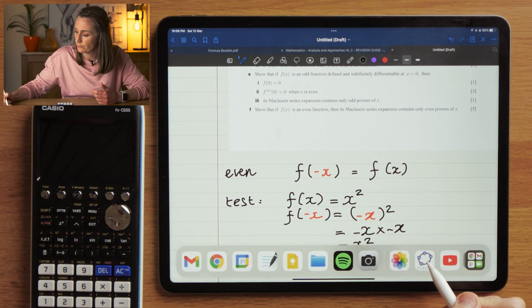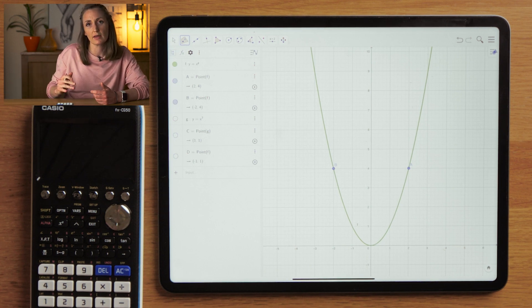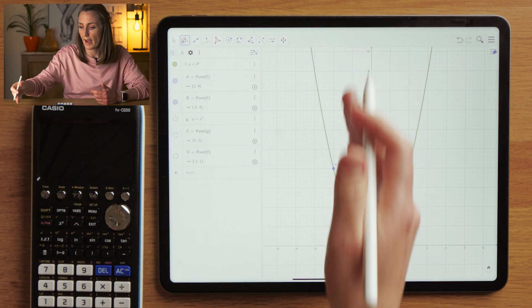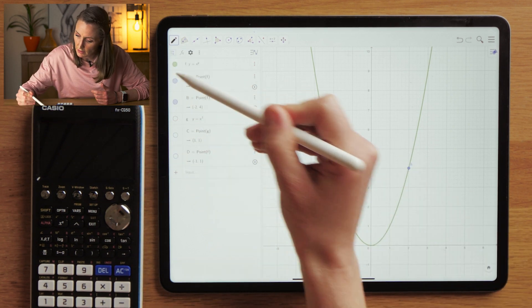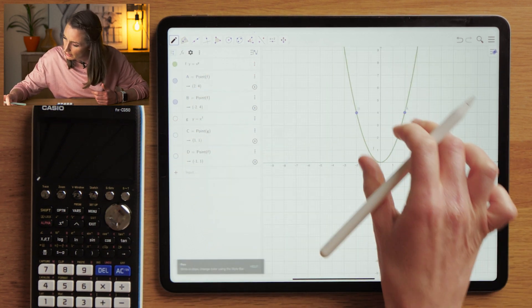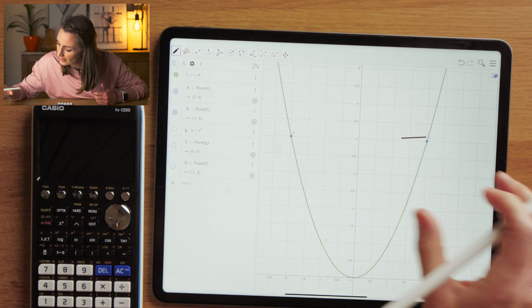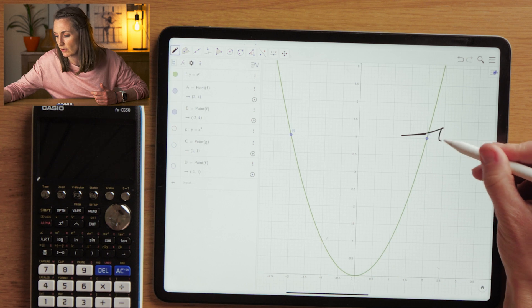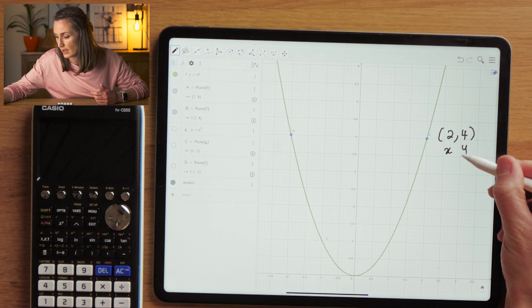So let's consider graphically what an even function looks like. Okay, an even function is symmetric around the y-axis. And why is that? If I take a point here, for example, this is my point here. We would agree, I hope we would agree, that a point on this curve would be (2, 4).